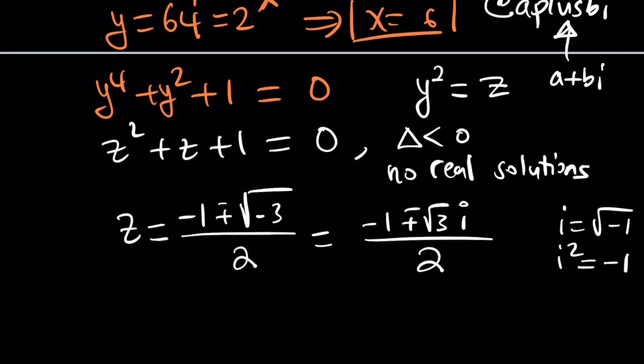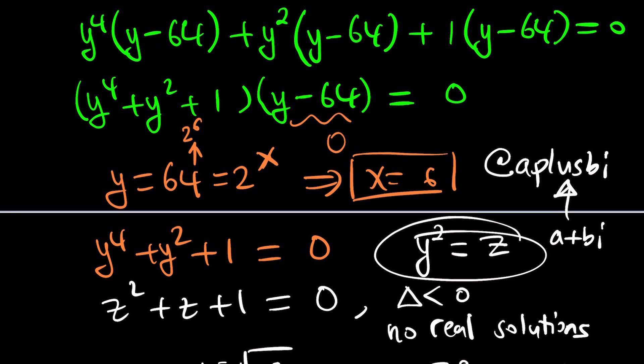Those are not real solutions. If z is not real, y is not going to be real either, because to solve for y, you're going to have to look at the square roots of z, and the square roots of this number aren't going to be real. So the only solution we end up with is x equals 6. That's so unique, right?